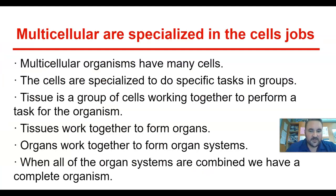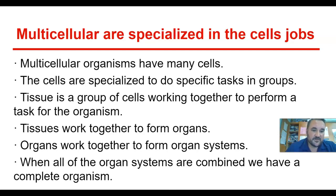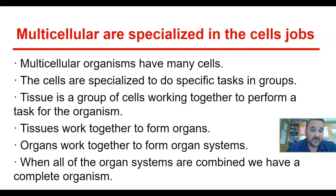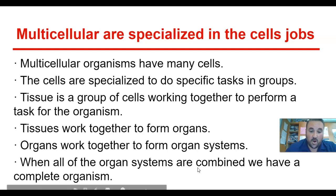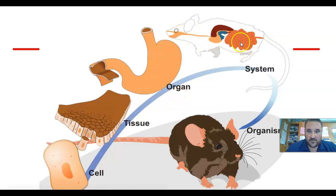If you are a multicellular organism, you have many cells — multi means many. The cells are specialized to do specific jobs. Going from cells to tissue: tissues are a group of cells that work together. You have a muscle cell; put a bunch of muscle cells together and you have muscle tissue. If you put muscle tissue plus connective tissue, which would be the tendons, you arrange them into making an organ — the full muscle. Eventually, putting all of the muscles together, you make a muscle system, the musculoskeletal system. Put all of the organ systems together and you get a complete organism. Cell, tissue, organ, organ system — this is the digestive system shown here — and then the complete organism.